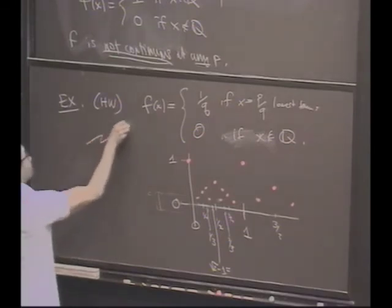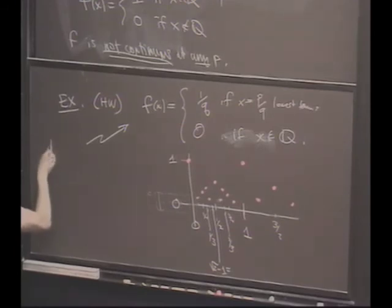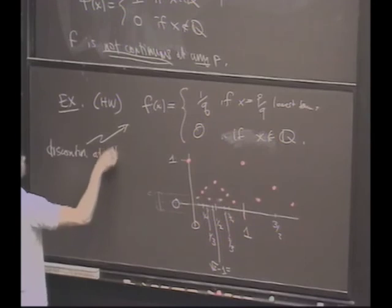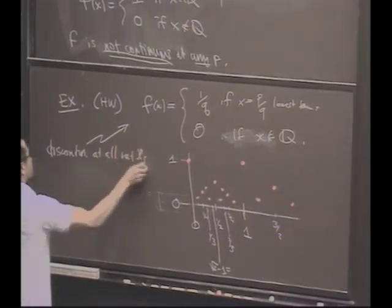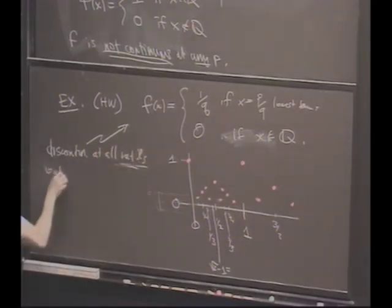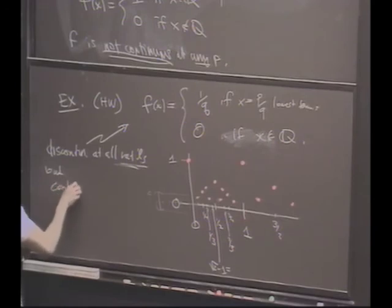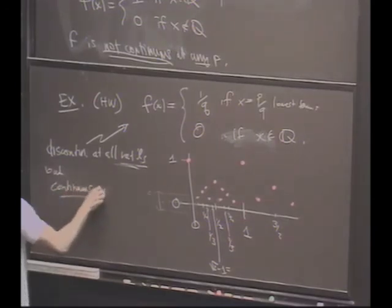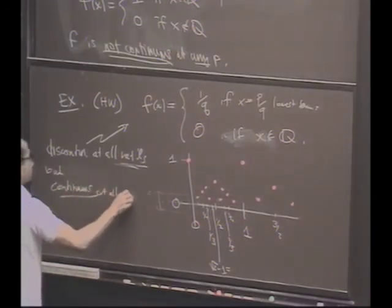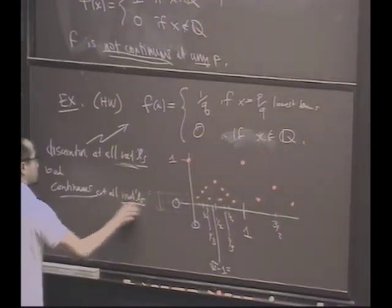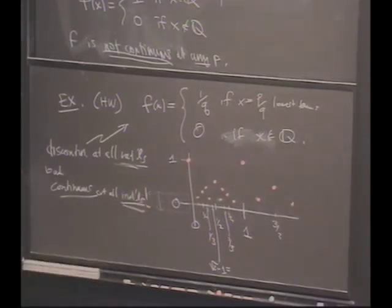So, this function has the amazing property that it is actually, while it's discontinuous at all rationals, it's actually, amazingly, continuous at all irrationals. An amazing function. So, in fact, you see the set of discontinuities.